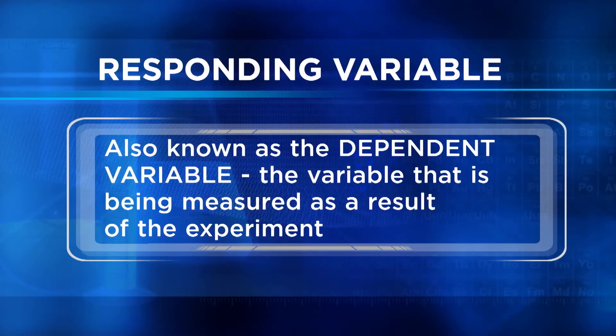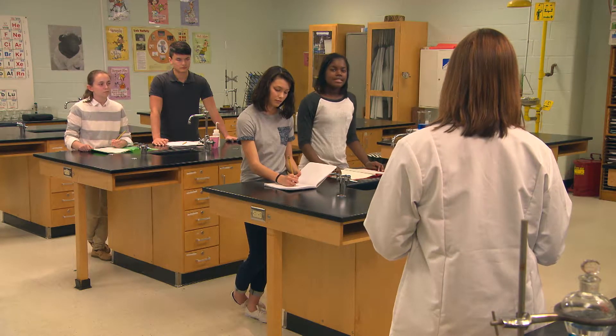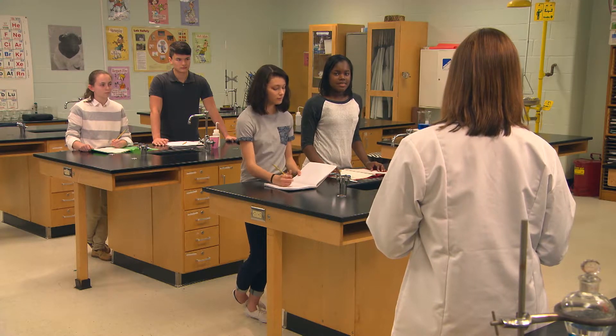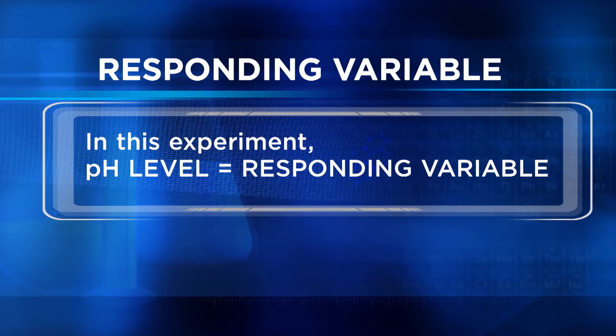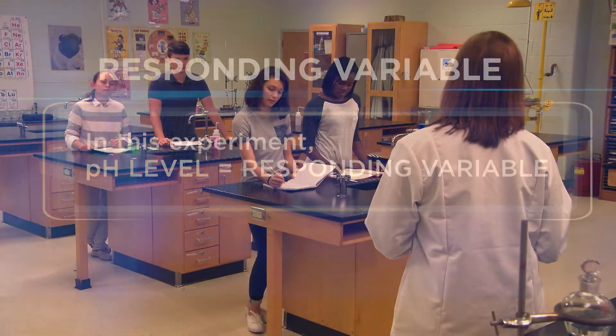Every experiment will have at least one responding variable, also called the dependent variable. The responding variable is the variable that you're measuring as the result of your experiment. Since we decided to measure the acid and base level of each sample by looking at its pH level, the pH level is the responding variable. Correct — the variable you're measuring is the pH of each sample. That's your responding or dependent variable.